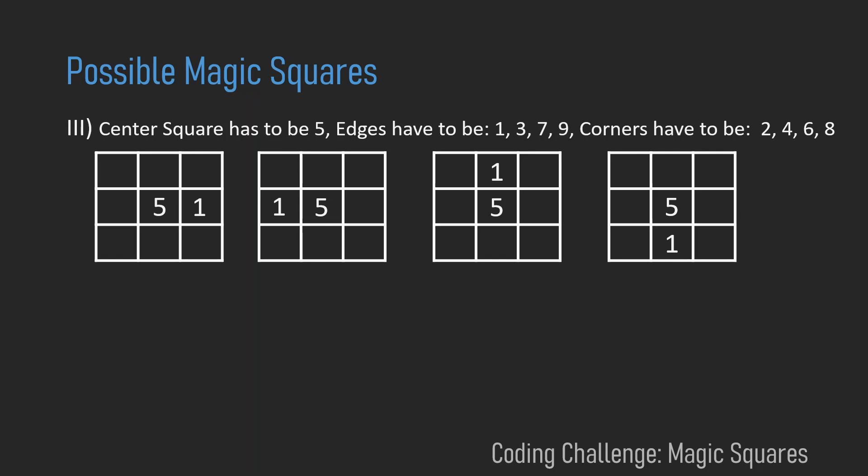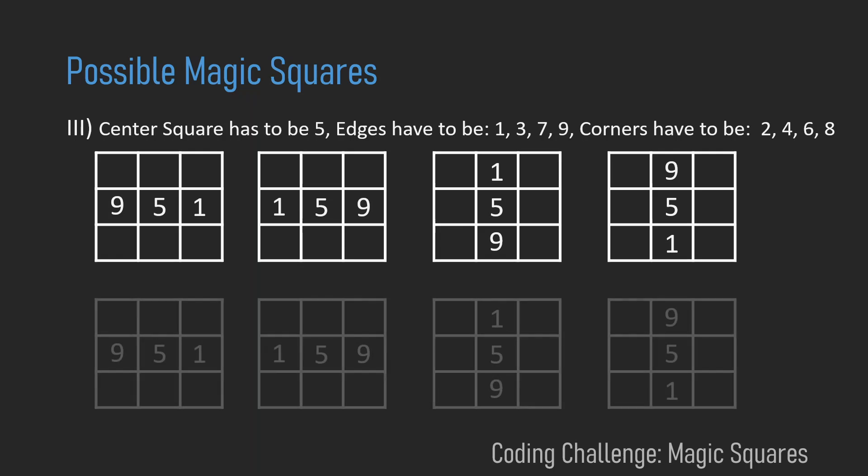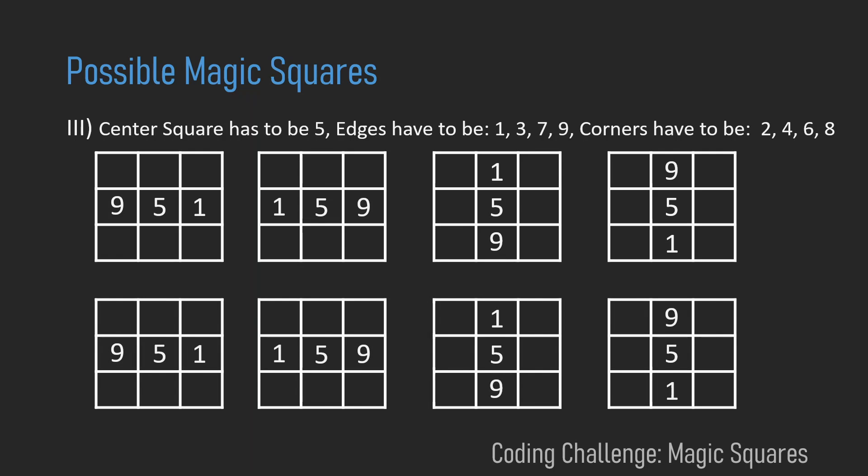And to form the sum 15, the 9 has to be always opposite of 1. So let's fill in the 9. Now let's make a copy of all those four magic squares, because in the end there will be eight of them.